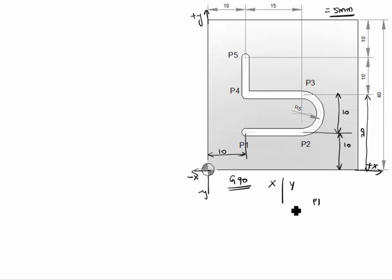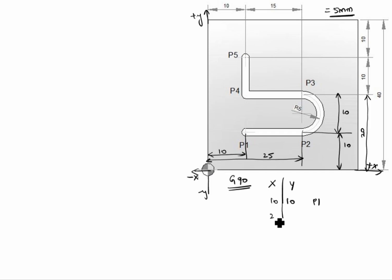Now we will write the P1 value. X is 10 and Y is also 10 for P1. After that we will go to P2. P2 starts from here — 15 plus 10 equals 25, so X is 25 for P2. What is the Y value? Y value is the same again, so Y is plus 10 for P2.